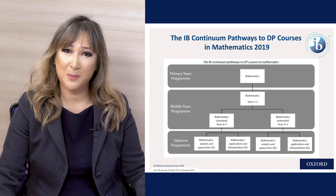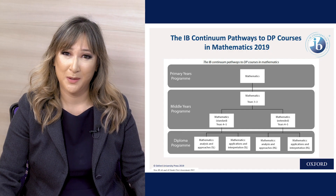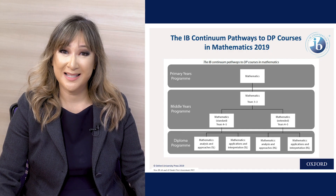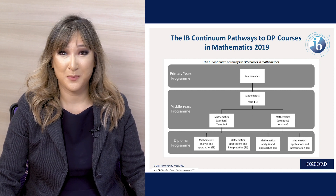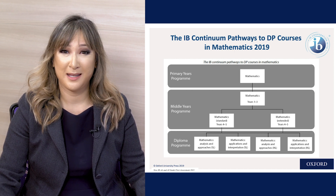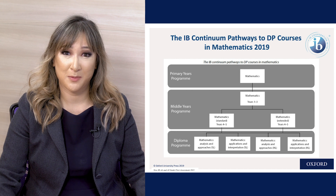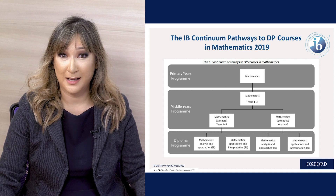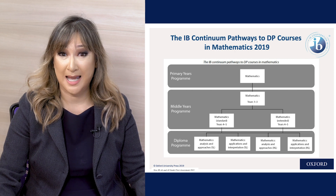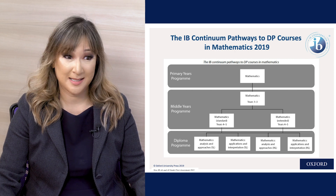But what happens before the Diploma Program? You can see on this chart that above we have the MYP Mathematics program for years four and five, offered at standard and extended level. So what is the alignment in terms of the conceptual framework from MYP to DP?